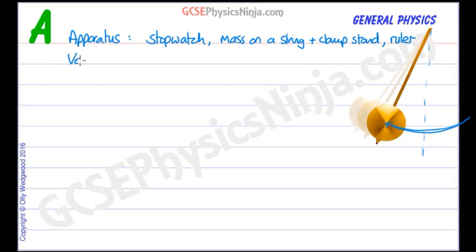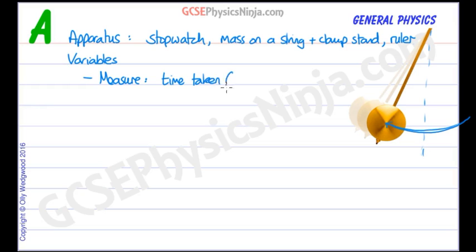Now some variables that we need to consider. First of all, the ones we're going to measure — the measured variables — are the dependent variables. Here we're going to measure the time taken for ten complete swings. A complete swing is called a single oscillation.